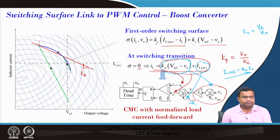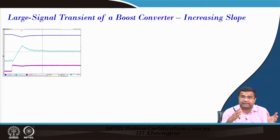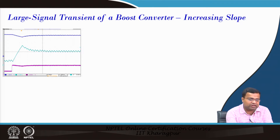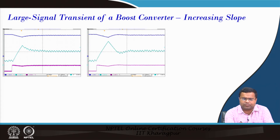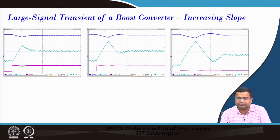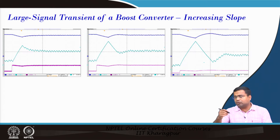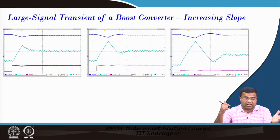If we increase the slope — and these are test results — with a smaller slope it does not recover in one switching cycle. If we increase the slope, it more or less recovers in one switching cycle. If you further increase it, there will be further current overshoot which might cause inductor saturation, increased current overshoot, voltage undershoot and overshoot, and as a result it may take longer time.